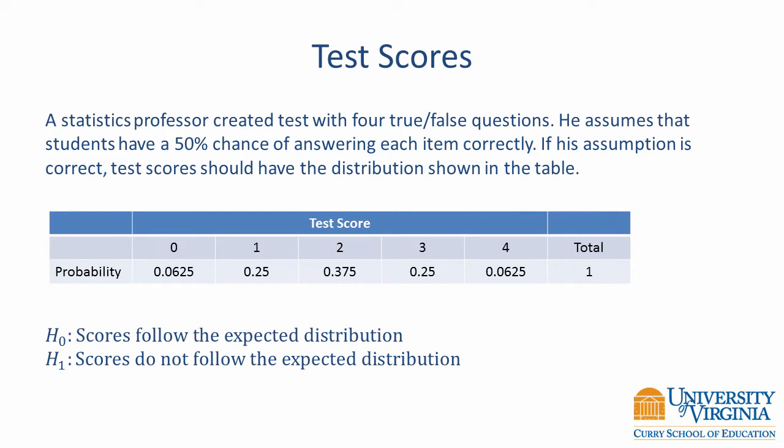In this example, a statistics professor created a test with four true-false questions. He assumed that students have a 50% chance of answering each item correctly. If his assumption is correct, test scores should have the distribution shown in the table.